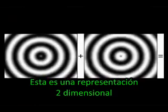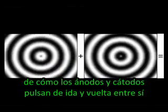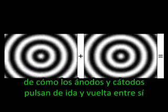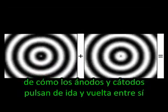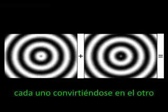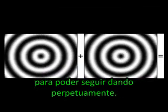This is a two-dimensional representation of how anodes and cathodes pulse back and forth between each other via rhythmic balanced interchange, each becoming the other, giving their electric light to each other so they may give again perpetually.